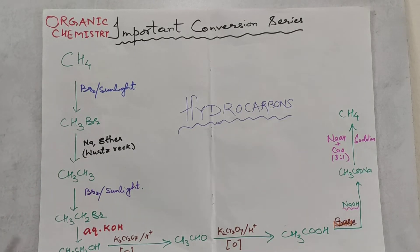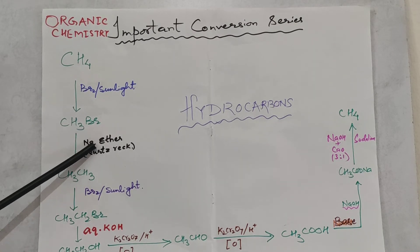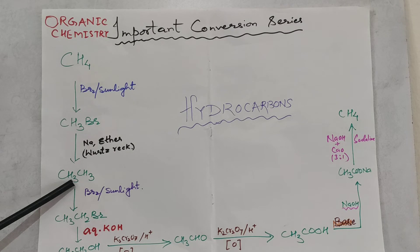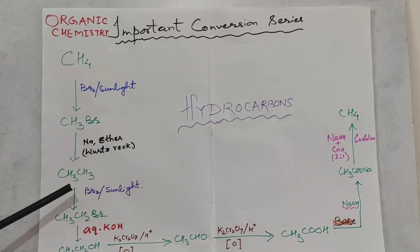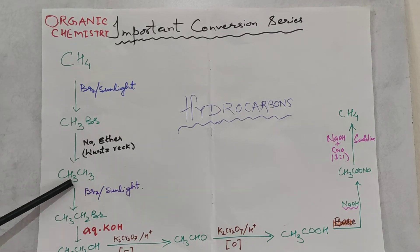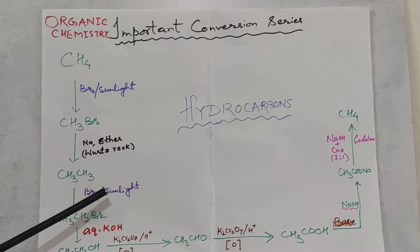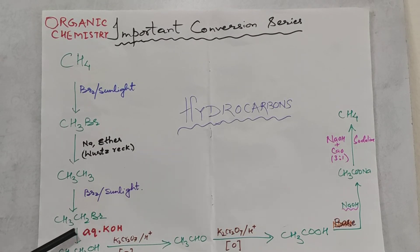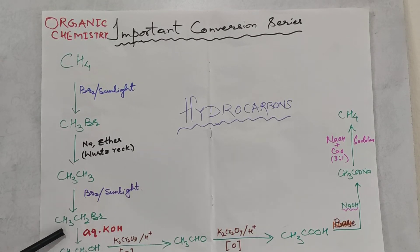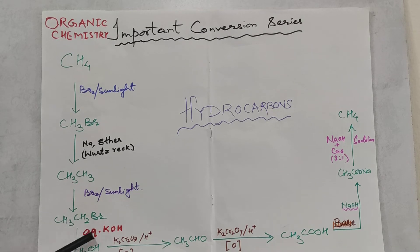Methyl bromide reacts with sodium in the presence of ether to form ethane. This reaction is called the Wurtz reaction. Ethane then undergoes free radical bromination in the presence of sunlight to form bromoethane.